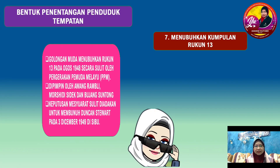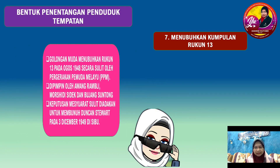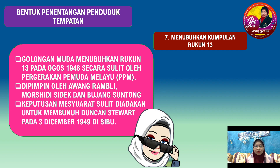Bentuk penentangan yang terakhir ialah menubuhkan kumpulan Rukun 13. Golongan muda menubuhkan Rukun 13 pada 13 Ogos 1948 secara sulit oleh Pergerakan Pemuda Melayu, yang dipimpin oleh Awang Ramli, Mushidi Siddiq, dan Bujang Sungtu. Keputusan mesyuarat diadakan ialah untuk membunuh Duncan Stewart pada 3 Disember 1949 di Sibu.